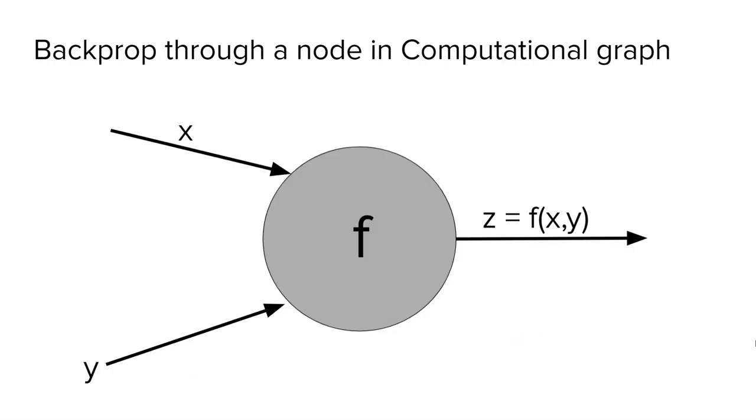Finally, we have an outgoing edge from the addition node which gives us our final result. Now we know how to make a computational graph, so let's try and understand how we can compute the gradient flowing out from a single node in the computational graph.